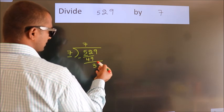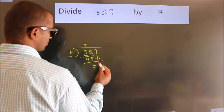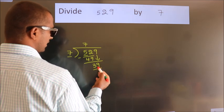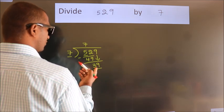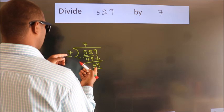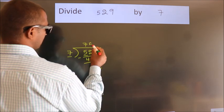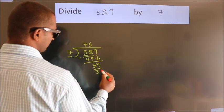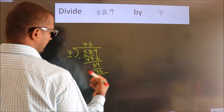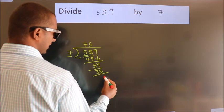After this, bring down the beside number. So 9 down. So 39. A number close to 39 in 7 table is 7 5s 35. Now we subtract. We get 4.